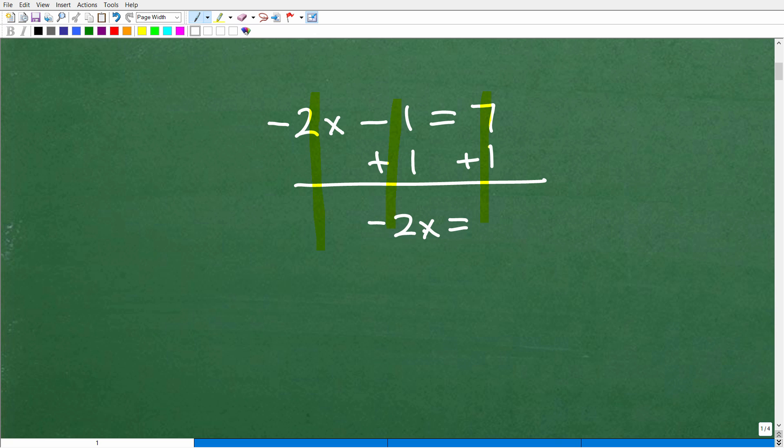Negative 1 plus 1 is 0. That goes away. Of course, I'm adding 1 to both sides of the equation. That's what I need to do. 7 plus 1 is 8. So now I got this nice little one-step equation. Negative 2x is equal to 8. So to solve for x, I got to divide both sides of the equation by negative 2. So x is equal to negative 4.